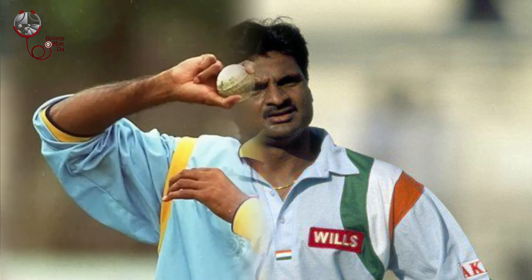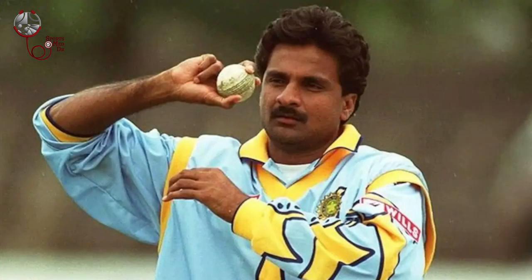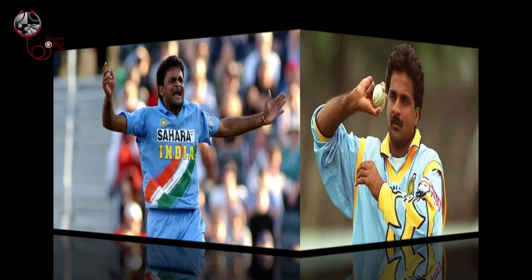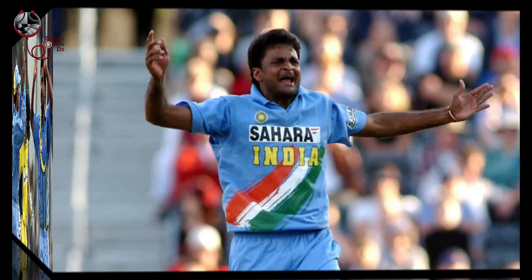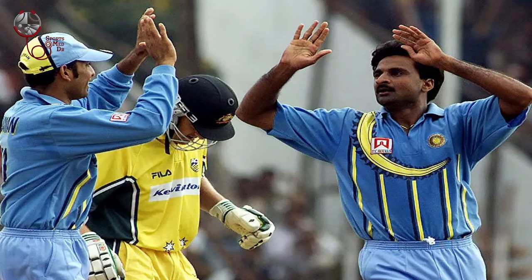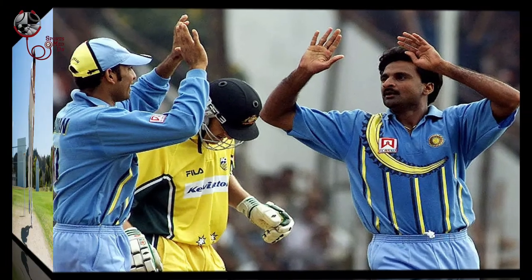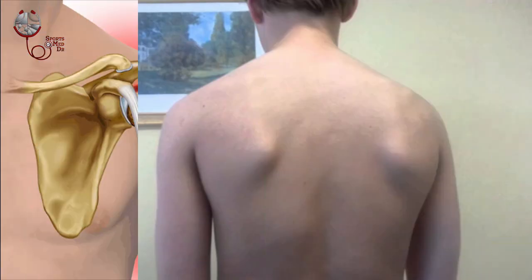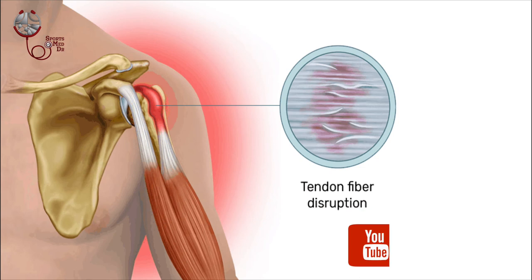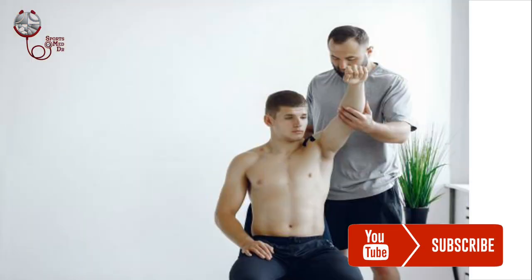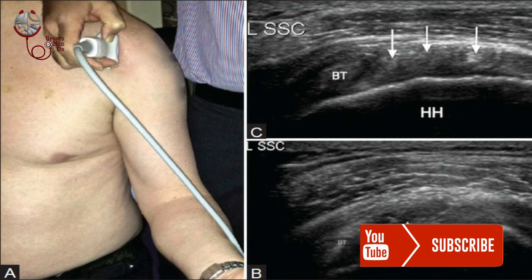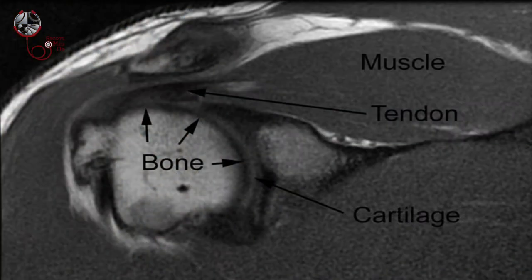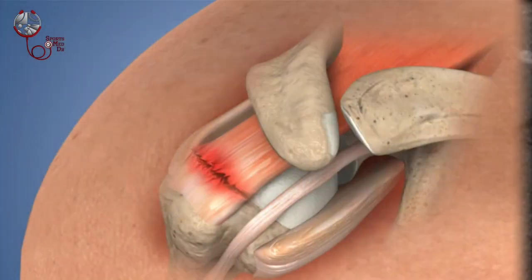Number one: rotator cuff tear. Did you know that Javagal Srinath was out for nine months due to a rotator cuff injury? There was even a viral April Fool's fake news saying he would return by bowling left-handed. Why does rotator cuff tear occur? Usually it is due to wrong technique, muscle imbalance, or overuse — mostly one of the three. Diagnosis is by examination, with ultrasound and MRI confirming the tear.